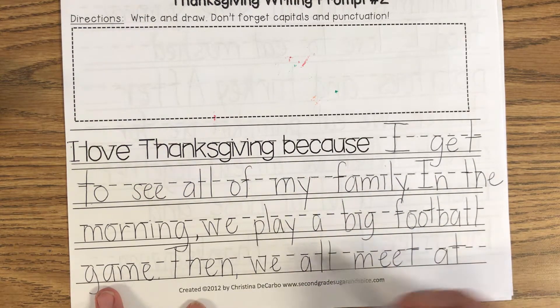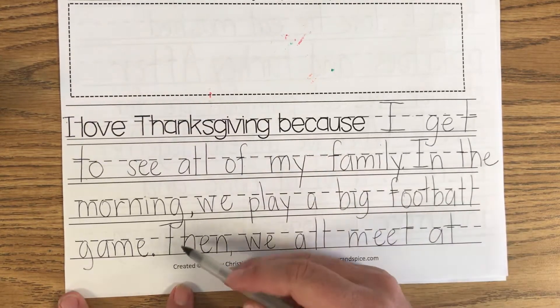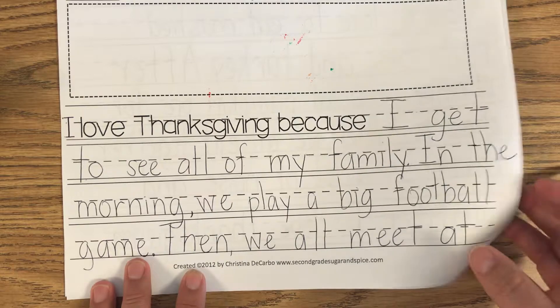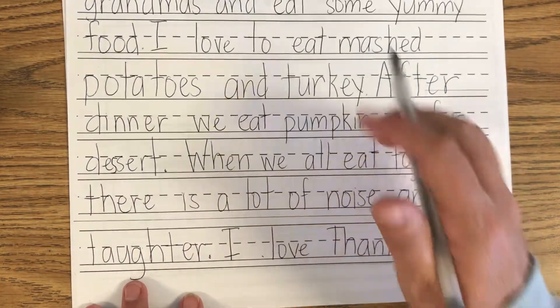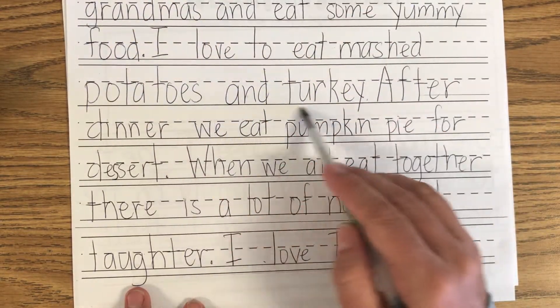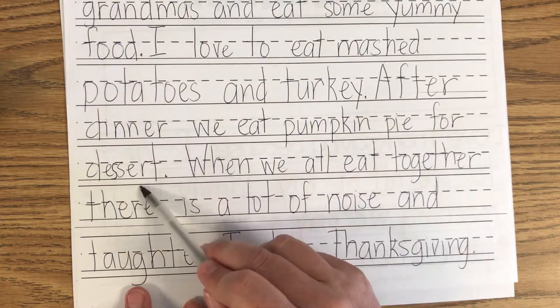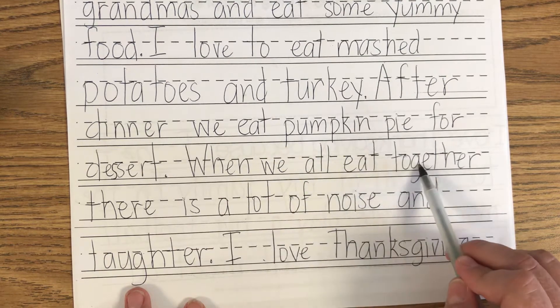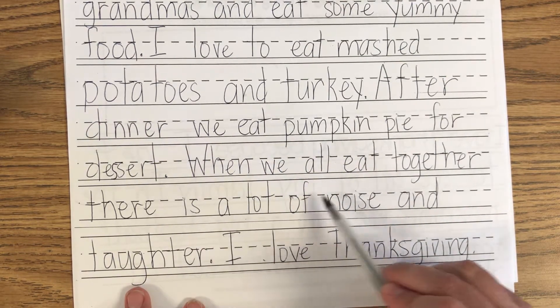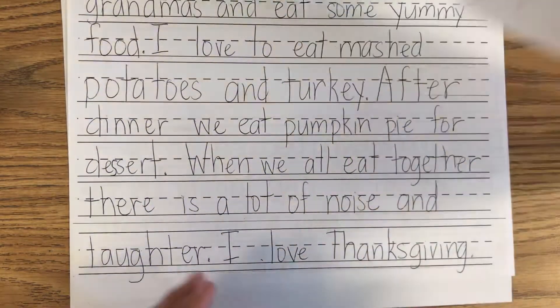We play a big football game. Then I have my other period because my sentence is complete, then start with a capital. We all meet at grandma's and eat some yummy food. Another period. I love to eat mashed potatoes and turkey. After dinner we eat pumpkin pie for dessert. When we all eat together there is a lot of noise and laughter. I love Thanksgiving.